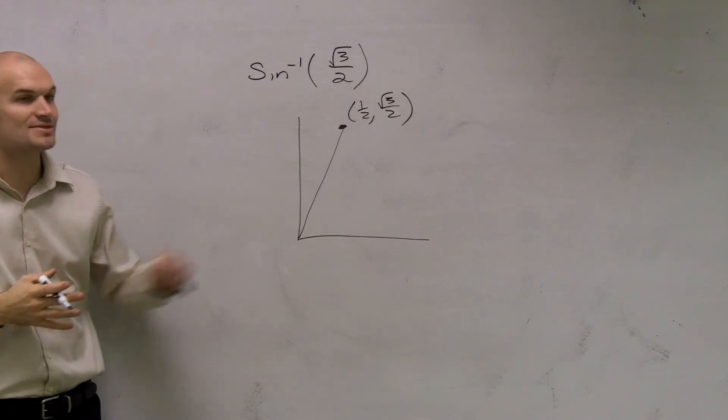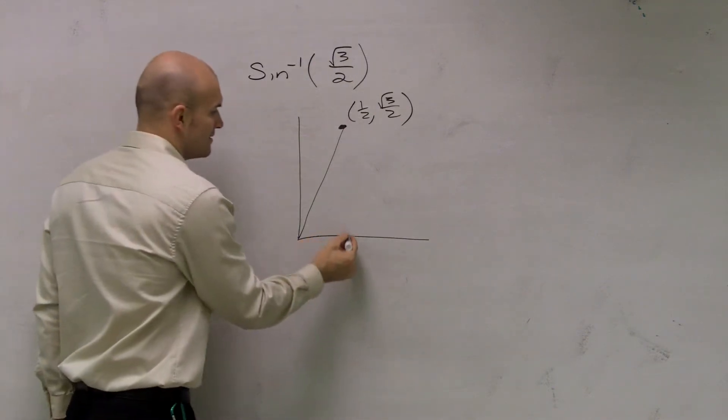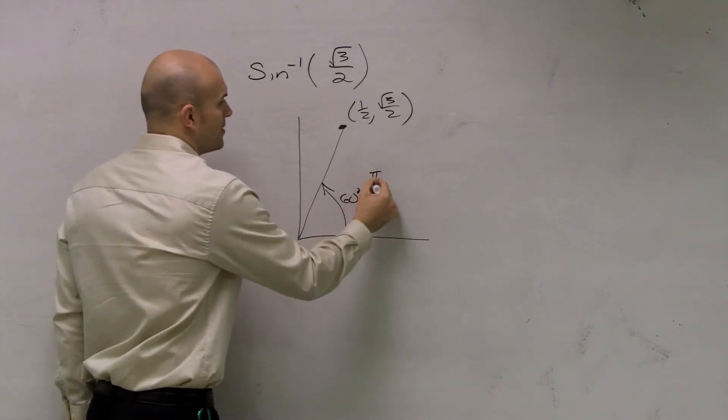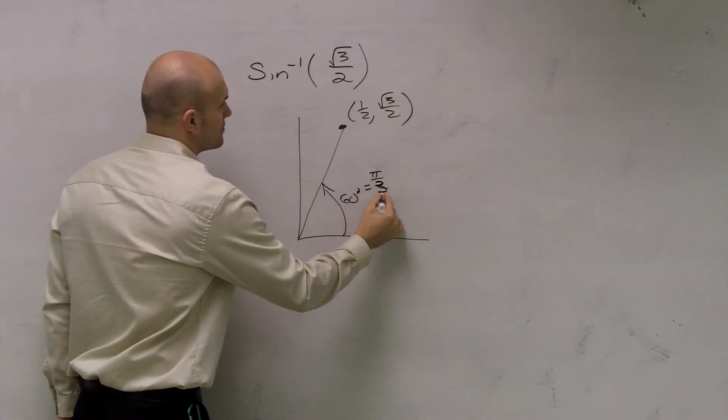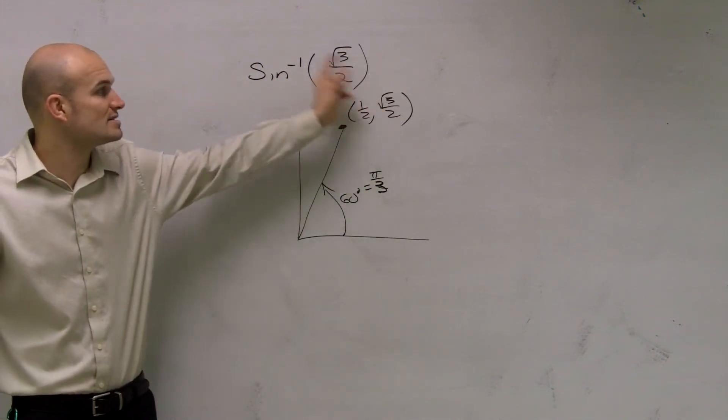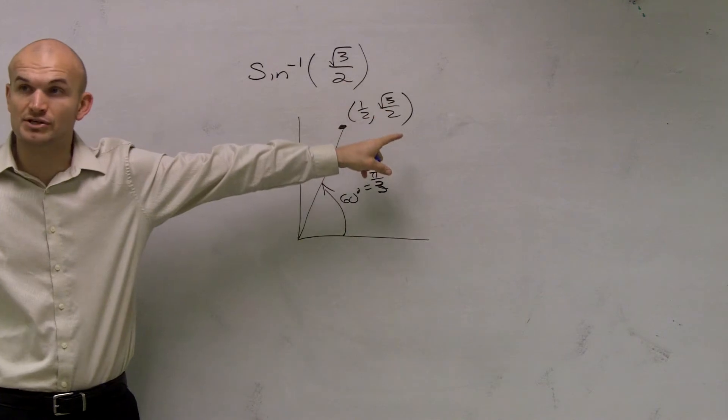When you look at this, we know that this point is at 60 degrees, right, or pi over 3. So this point, 60 degrees or pi over 3, we know that's our coordinate point where sine is going to equal radical 3 over 2.